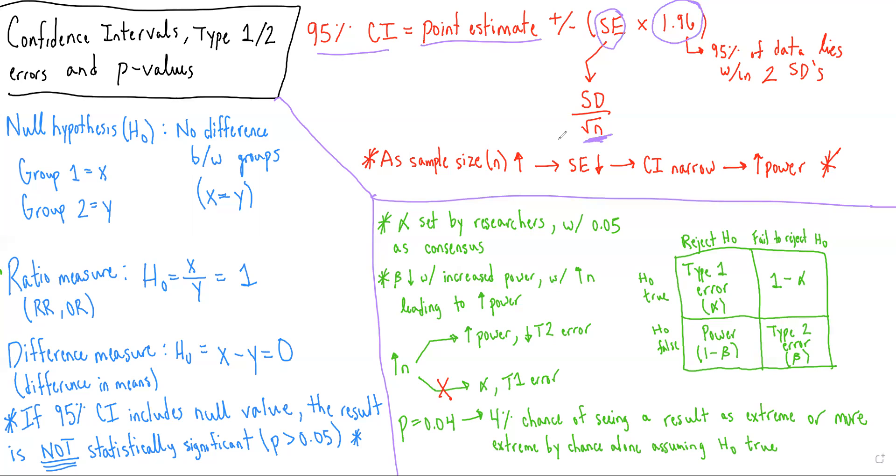So one commonly tested concept related to confidence intervals is that as sample size or n increases, standard error will decrease because we're making the denominator larger. This will cause the confidence interval to be more narrow, and this will lead to an increase in statistical power. And statistical power is the ability to reject the null hypothesis, assuming the null hypothesis is not true, which we'll talk about a little bit later in this lecture. This is a heavily tested concept and something to always keep in mind.